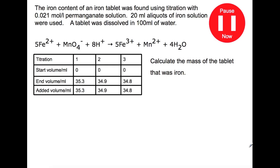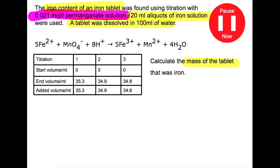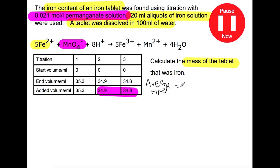Pause the video now and try this last calculation on volumetric analysis. In this question we're looking at the iron content of an iron tablet. We're taking 20 millilitre aliquots of an iron solution — the tablet was originally dissolved in 100 mL of water — and trying to find the mass of iron in the tablet. The iron is titrated with 0.021 mol per litre permanganate solution, and iron and permanganate react in a 5-to-1 ratio. The first thing we do is calculate the average titre of permanganate: we take the two concordant titres, 34.9 and 34.8, and divide by 2 to get 34.85, which we divide by 1000.